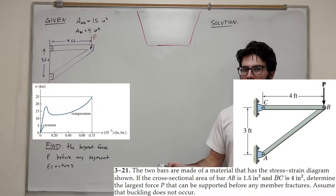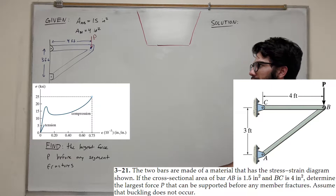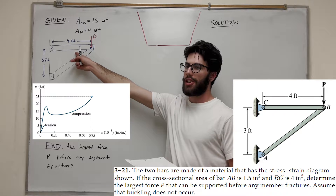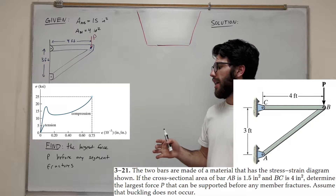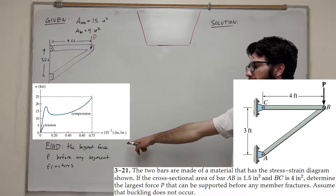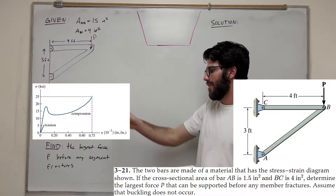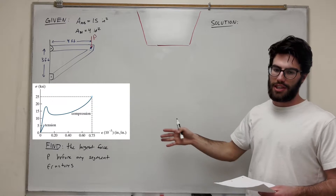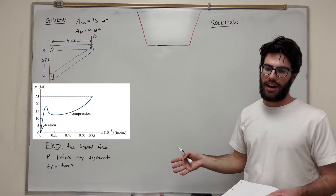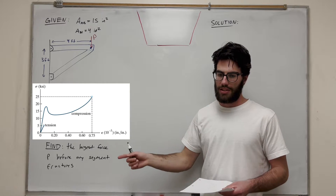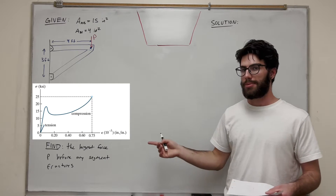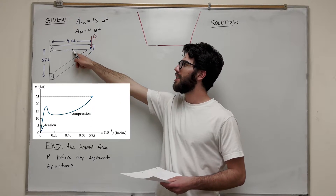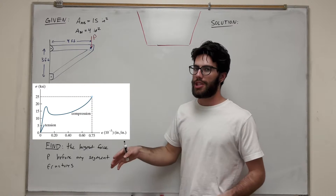What's up, Todd gang? Welcome back to some mechanics and materials. So we have a problem here — we have this two-beam figure and we're applying a force to it. Our goal is to find the largest force we can apply at P before any of the segments fracture. We're also given a stress-strain diagram with a different line for tension and a different line for compression. So we need to analyze these two beams and figure out which one's going to break first.